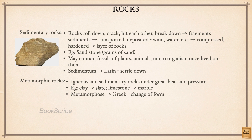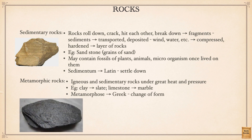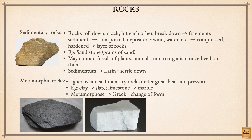When igneous or sedimentary rocks change form because of high temperature and pressure, transforming from one form to another, they are called metamorphic rocks. This word comes from the Greek word 'metamorphose', which means change of form. The best example is clay changing into slate, and limestone changing into marble.